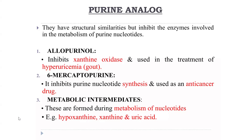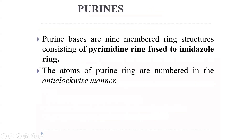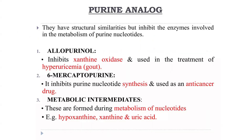Cancer involves irregular replication of cells. As those irregular cells develop, the DNA is also replicating. To stop this irregular replication, drugs like 6-mercaptopurine block nucleotide synthesis, thereby being used in cancer treatment.